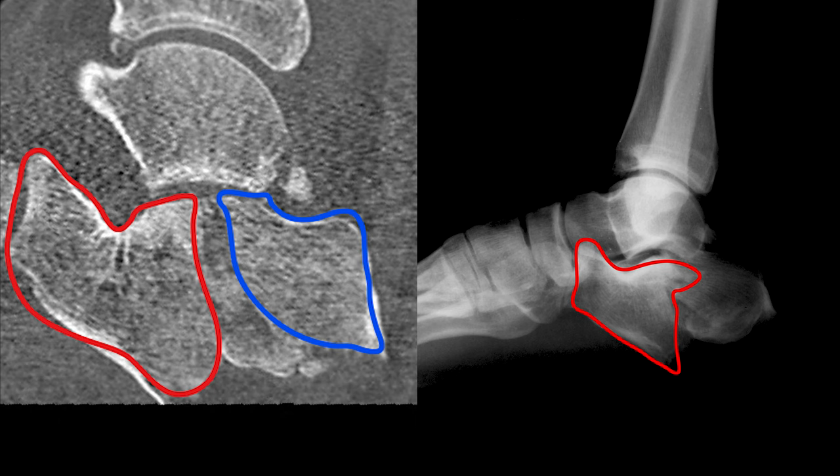The blue fragment is the so-called tongue fragment. It contains a part of the posterior facet and a major part of the calcaneal tuber, including the heel tendon attachment. The yellow fragment is the calcaneal tuberosity.